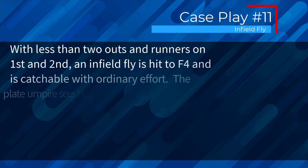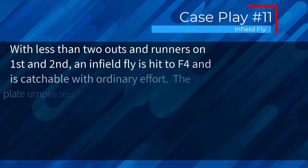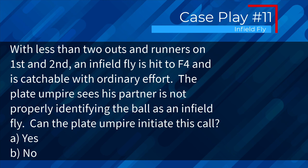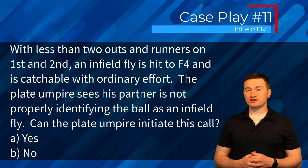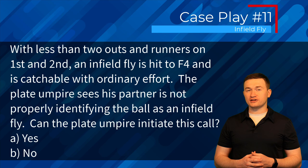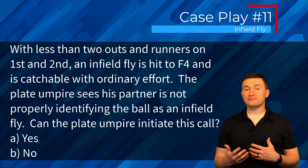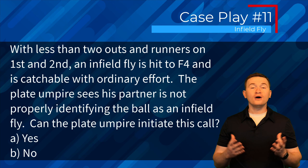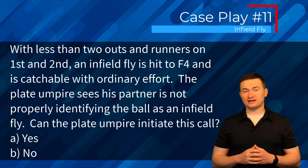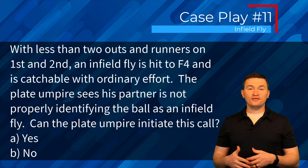Case play eleven: with less than two outs and runners on first and second, an infield fly is hit to F4 and is catchable with ordinary effort. The plate umpire sees his partner is not properly identifying it as an infield fly — can the plate umpire initiate this call? Yes. Either the plate or base umpire can make the call. Ideally we leave it to the partner with normal coverage, but if needed step up. Also, anytime an infield fly is called, all other umpires must echo that call.